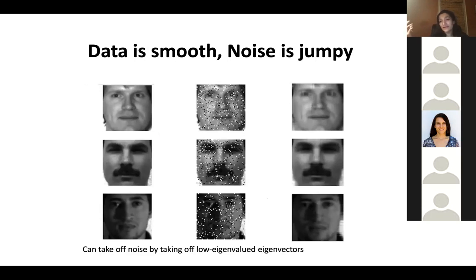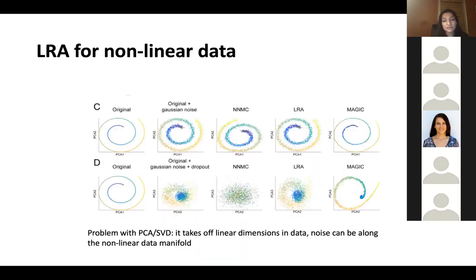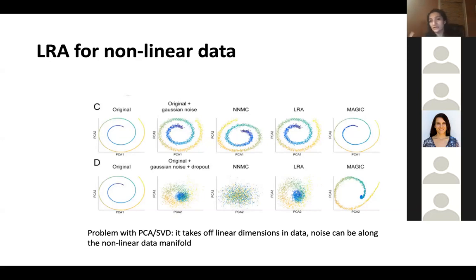This was well established in image processing where you can remove noise from images — the real signal is smooth but the noise is jumpy, so you can get rid of high-frequency components by removing low-eigenvalue eigenvectors from PCA. But if you actually try that on data with strong non-linearity, as a lot of biomedical data has, it doesn't work well. PCA or SVD can't pick up noise in a coiled dimension; it will just try to remove planes of linear spaces, leaving the data noisy. So we definitely needed something non-linear.